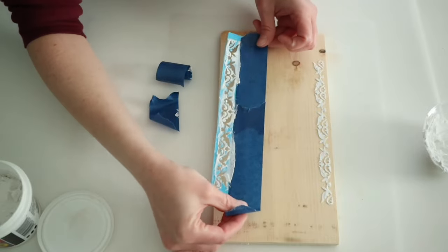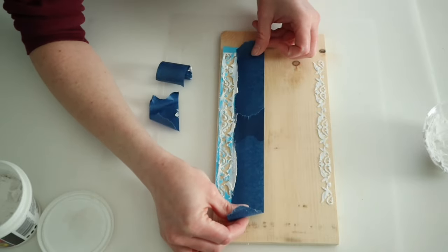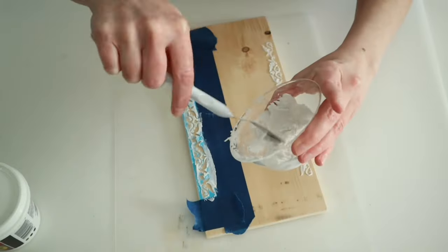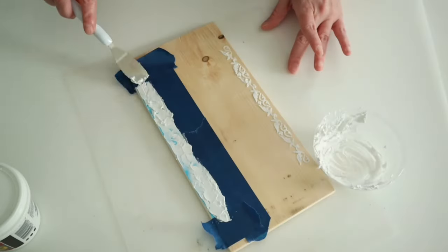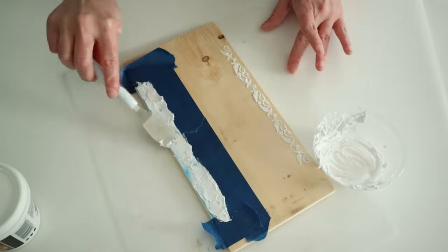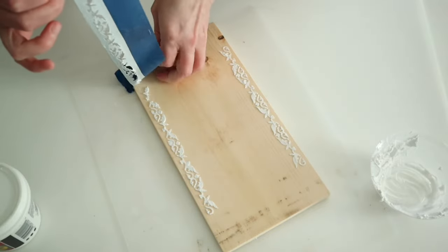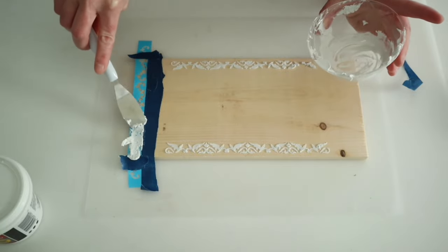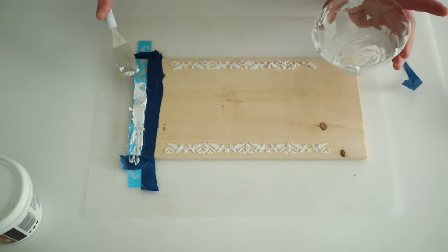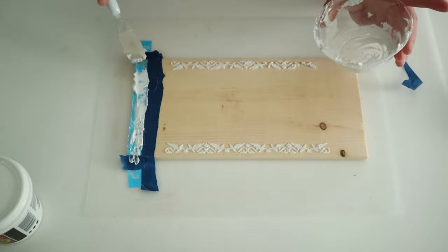Then I'm just going to go ahead and I'm going to do the other sides of my wood plank. For the two smaller sides of my wood plank, I decided to do a different stencil, but it's still the same technique.